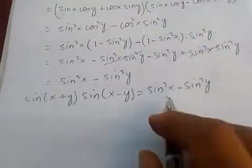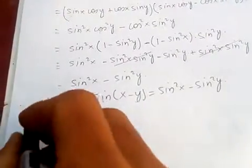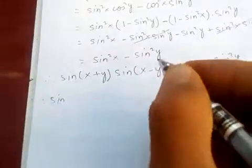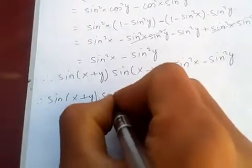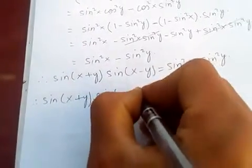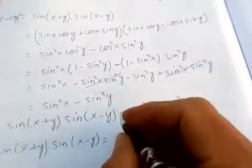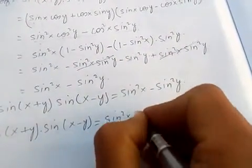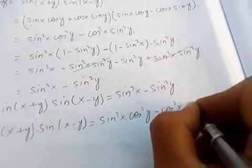Now, we want this in terms of cos again. So, sin of x plus y times sin of x minus y — and this one — gives us sin squared x times cos squared y minus cos squared x.